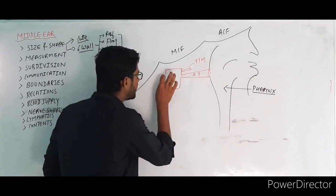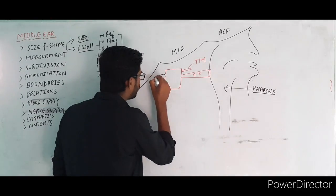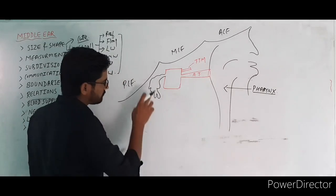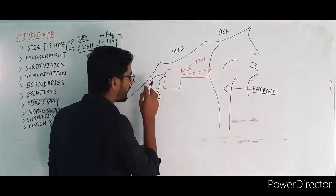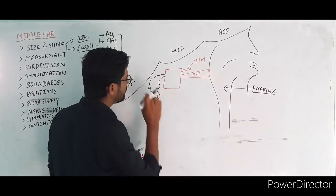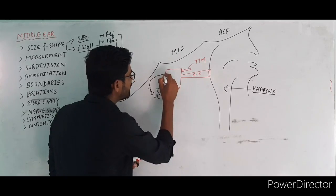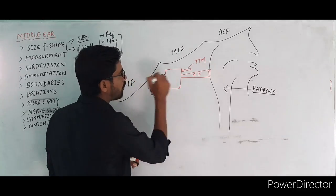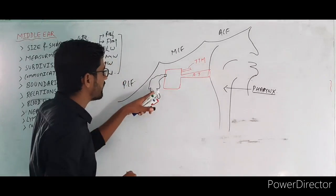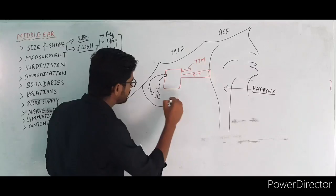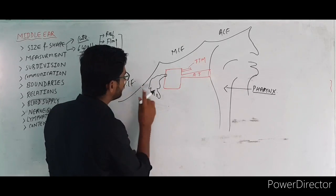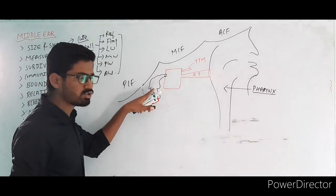The anterior wall has a canal for the tensor tympani muscles and the auditory tube. Posteriorly, the middle ear communicates with the mastoid cavity. The mastoid cells are pocket-like structures, and the opening is called the aditus and antrum. The aditus leads into the antrum, and here is the mastoid process.